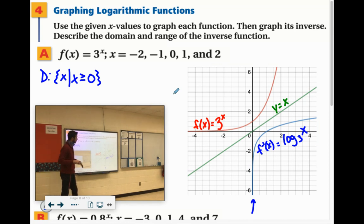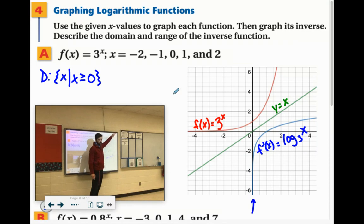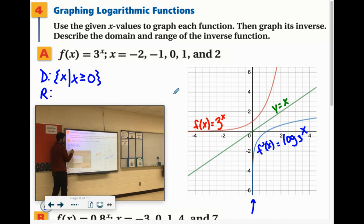Now the range is all our y values. That goes from negative infinity and it technically goes on forever in this direction. To get up here, it would take forever. I mean, it would take so long. But technically, it still can go forever vertically. So the range would be all real numbers.